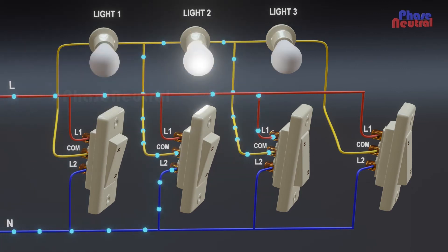When the second switch is in on position, current flows through the third switch common terminal to the second bulb.